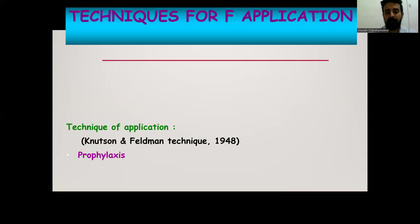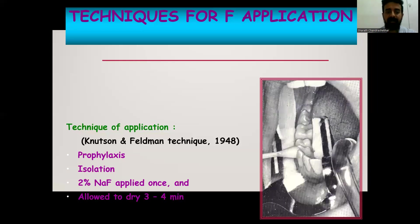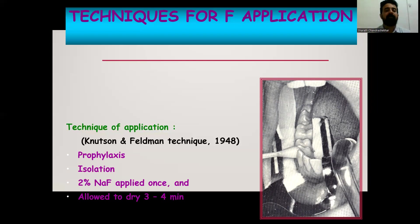Following prophylaxis, you need to isolate the teeth, because the solution should not come in contact with the soft tissues. Isolation is done by means of cotton rolls or a rubber dam. Then 2% sodium fluoride is applied and allowed to dry for 3 to 4 minutes. As seen in the picture, cotton holders are placed on the buccal and lingual sides. A cotton bud or micro tip is dipped in the solution and applied thoroughly on the surface of all the teeth, waiting around 3 to 4 minutes for it to dry.